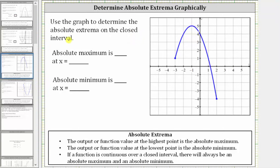Use the graph to determine the absolute extrema on the closed interval. The output or function value at the highest point is the absolute maximum, and the output or function value at the lowest point is the absolute minimum. If a function is continuous over a closed interval like we have here, there will always be an absolute maximum and an absolute minimum.